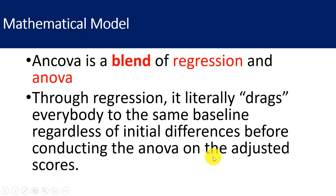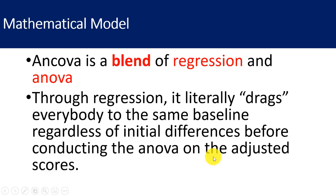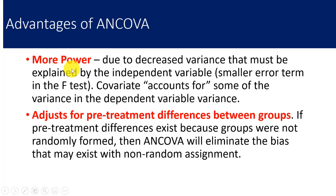What is the mathematical model? ANCOVA blends regression and ANOVA. Regression drags everybody back to the same baseline — it literally adjusts everyone to the same starting point regardless of initial differences. So if one group scored 10, another 5, another 2, another 3, regression will bring everyone to the same baseline before conducting the ANOVA on the adjusted scores. The advantages of ANCOVA are more statistical power and adjustment for pre-treatment differences between groups.